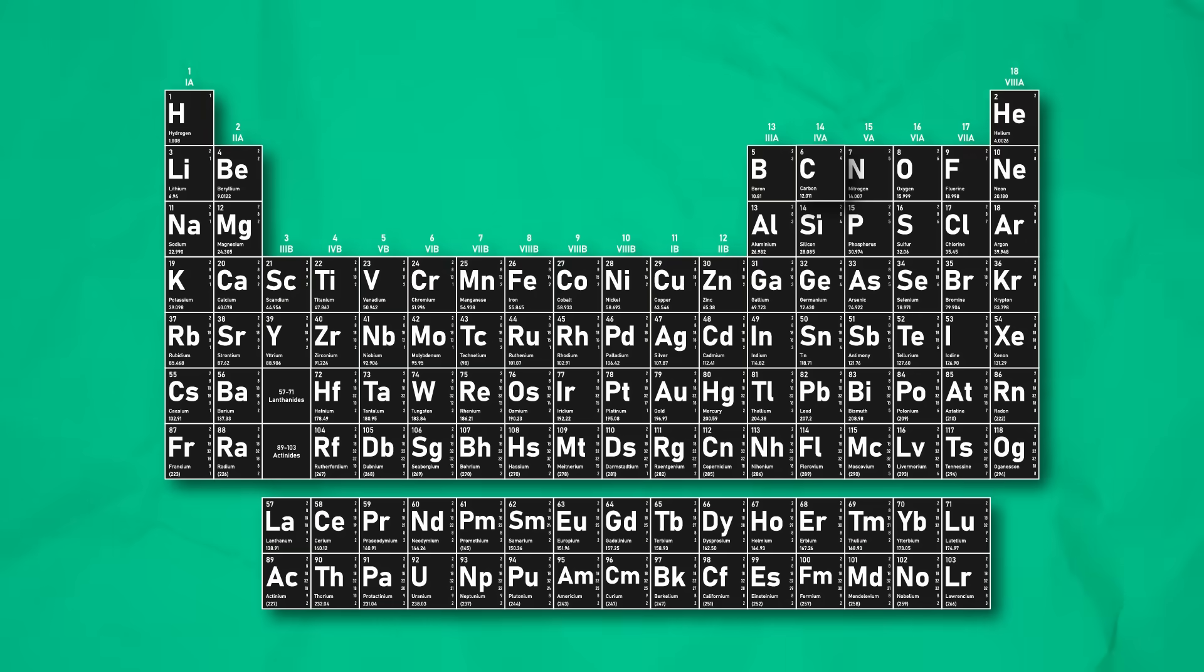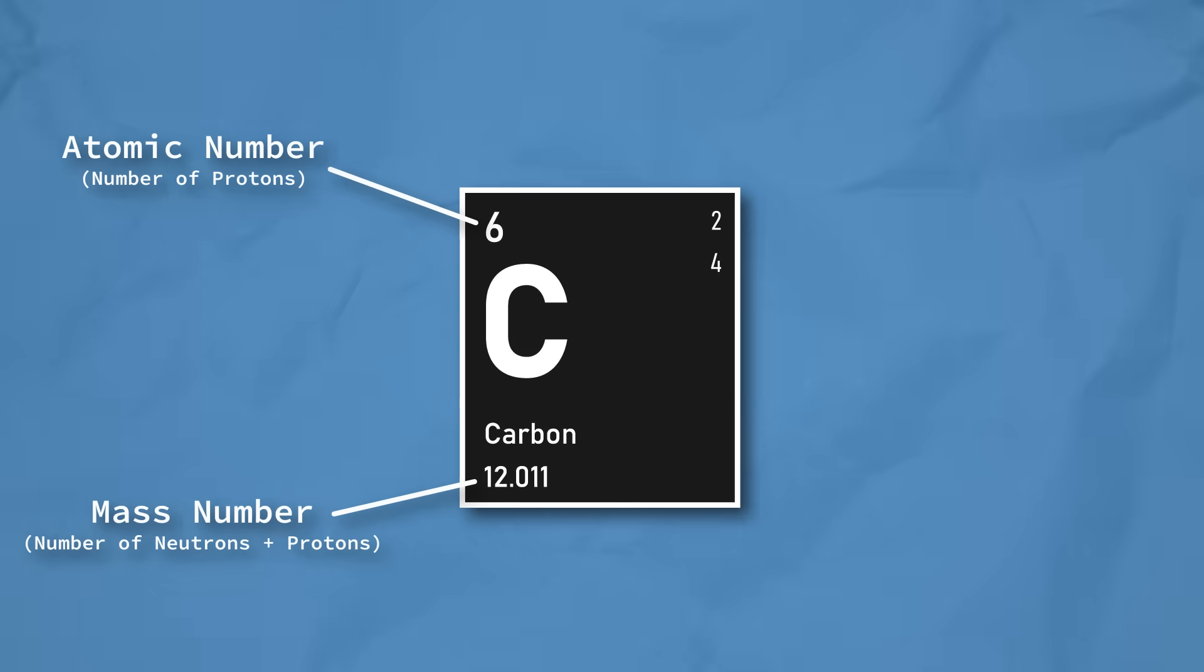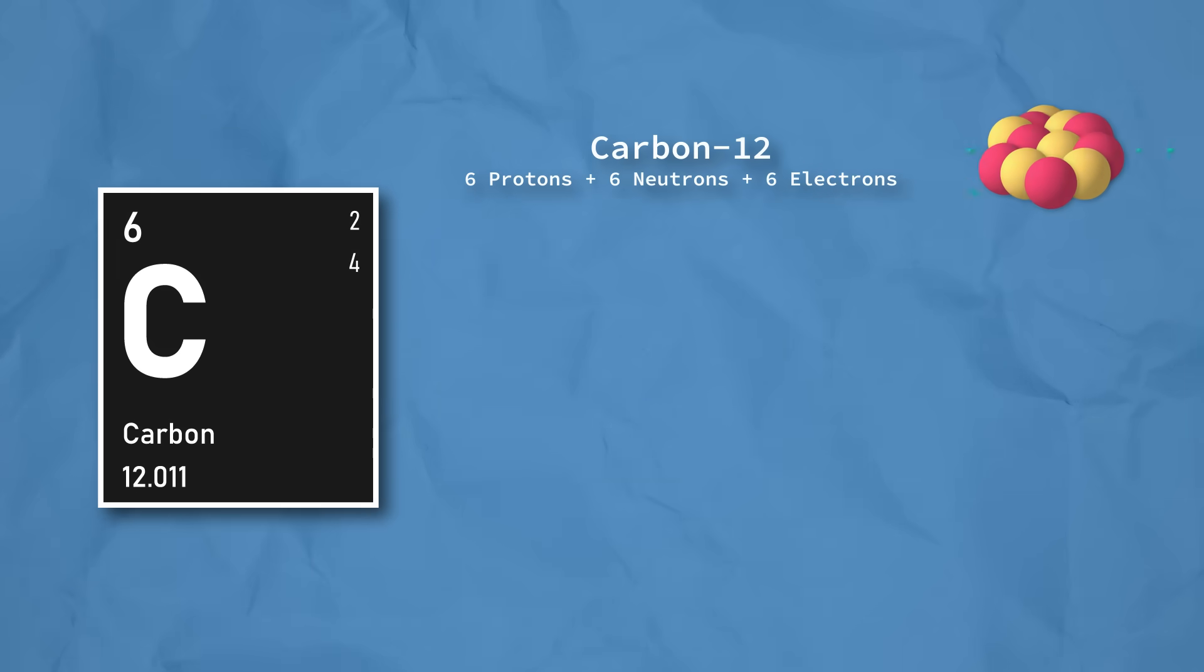But let's forget about unobtainium for a minute and take a look at good old ubiquitous carbon. Elements are defined by the number of protons they have, so carbon is carbon because it has 6 protons. It also has 6 and a bit neutrons. A bit? Because it has 3 naturally occurring isotopes.